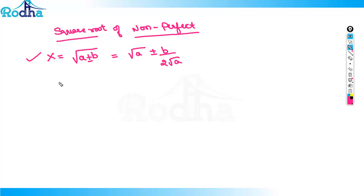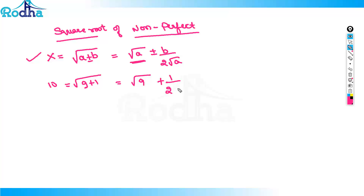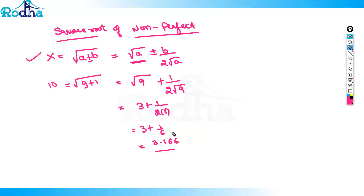I will take an example: square root of 10. 10 can be written as 9 plus 1, where the first part must be a perfect square. So, √(9+1) = √9 + 1/(2√9) = 3 + 1/6 = 3.166. In this way you can find the square root of any non-perfect square number.